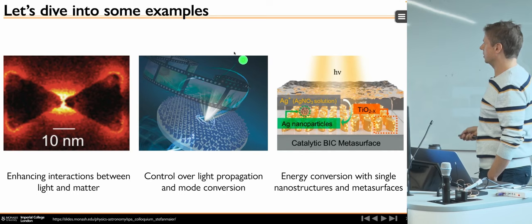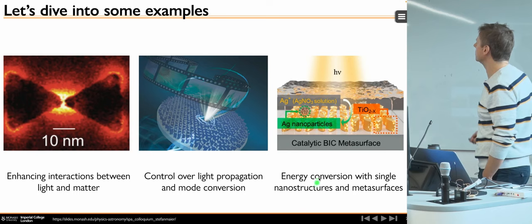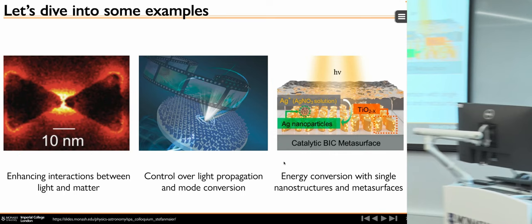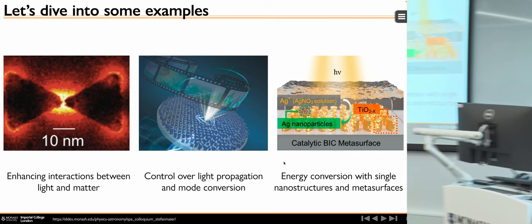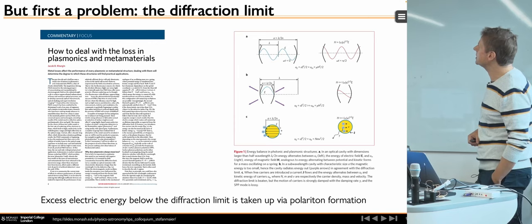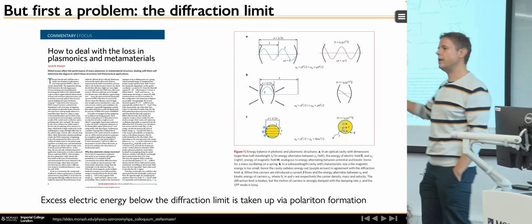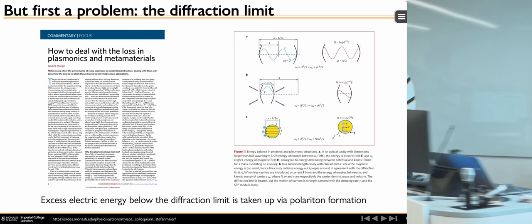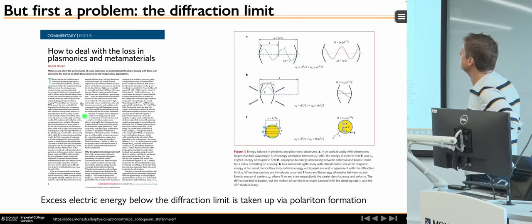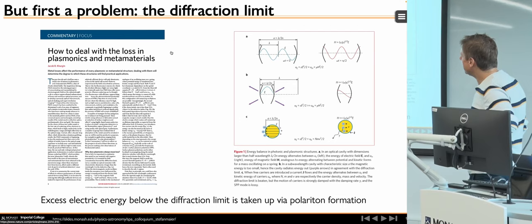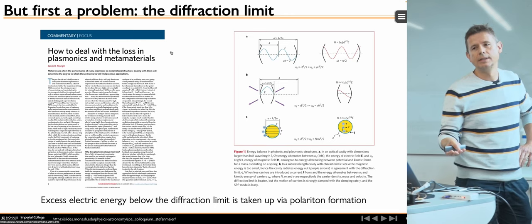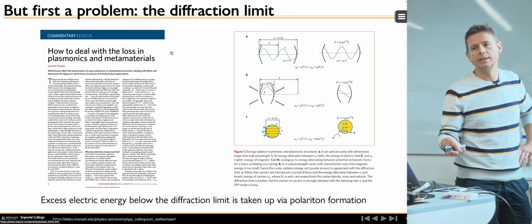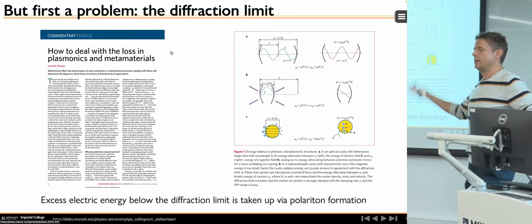So first we'll look at enhancement of interactions of light and matter, then control over propagation of light and mode conversion, and in the last few minutes, energy conversion in the context of photocatalysis. Let me first briefly state the problem — the diffraction limit. You can think about it via Fourier reciprocity, or with photons via Heisenberg uncertainty principle. In an electromagnetic wave in a well-behaved cavity with standing waves, the electric field energy equals the magnetic field energy and they coherently exchange.